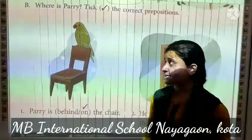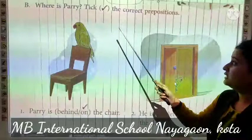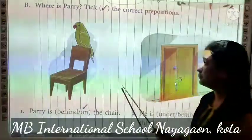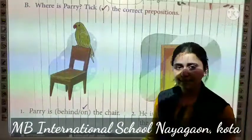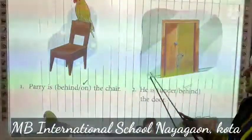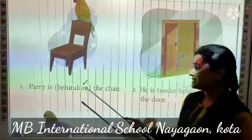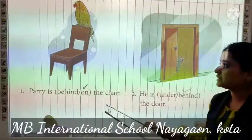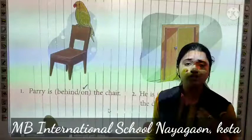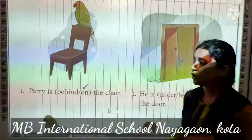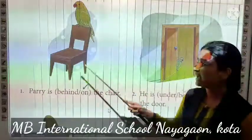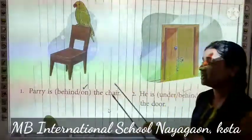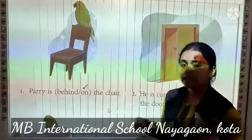Let's move to the next exercise. Where is Parry? Tick the correct prepositions. Parry yaaampe eek parrot hai, iski place ke according aapko correct prepositions pe tick laga na hai. First, Parry is dash the chair — behind or on. Behind means piche, on means upar. Picture mein joh Parry hai woh on hai, means upar baitha hai — Parry is on the chair, Parry chair ke upar hai.